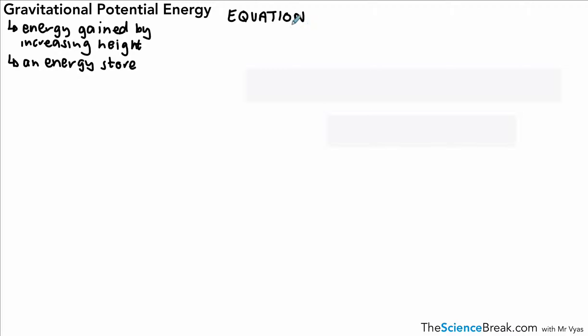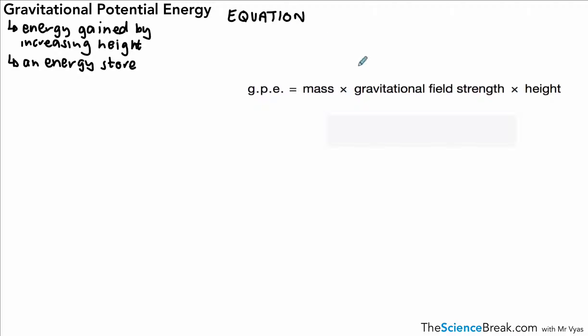As it's energy, we measure it in joules. We're going to use an equation to calculate gravitational potential energy: gravitational potential energy equals mass times gravitational field strength times height. This unfortunately you have to memorise — it will not be given to you in the exam. Gravitational field strength is the effect of the force of gravity, given a value on planet Earth of 10 newtons per kilogram.